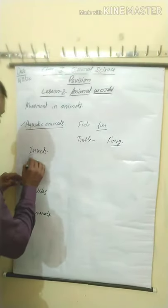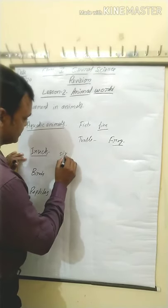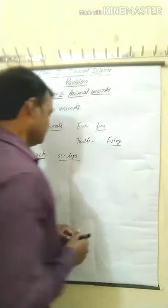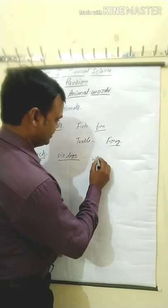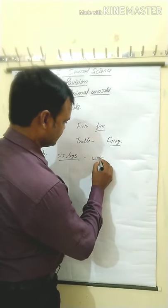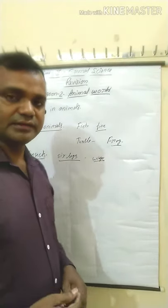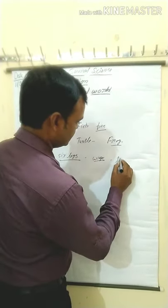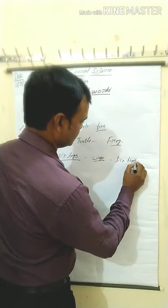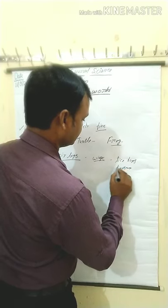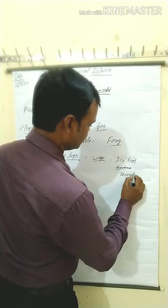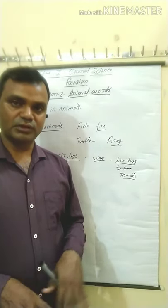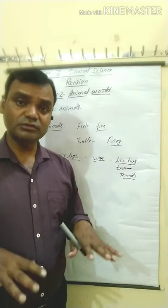Next: Insects. Most insects have six legs. With the help of six legs, they move from one place to another place. They also have wings, and with the help of wings, they can fly from one place to another place. Some insects like lice, bugs, and termites do not have wings — they stay on the ground and their movement is called crawling.